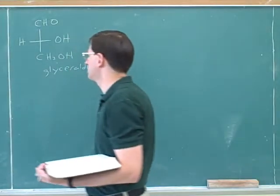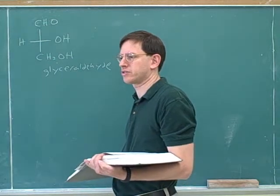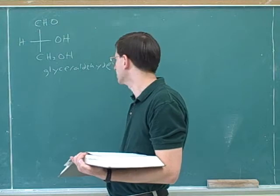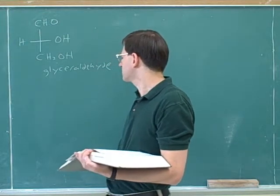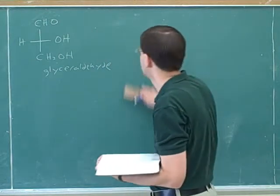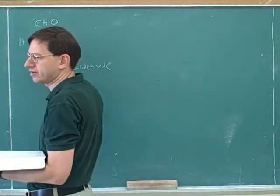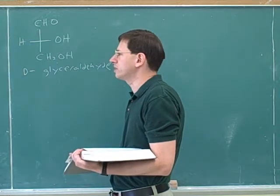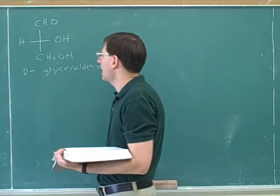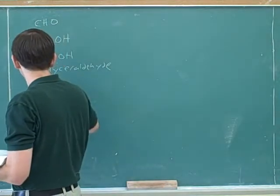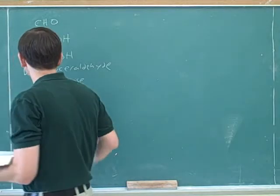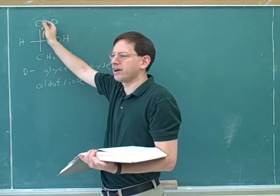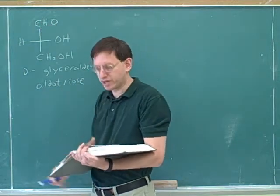Most organic chemistry professors don't require you to memorize the structures of the sugars, but you should probably know what glyceraldehyde looks like. This is the smallest sugar. This is D-glyceraldehyde because the stereocenter is pointing to the right. And this is what we could call an aldotriose — aldo because of the aldehyde group, and triose because there are three carbons.